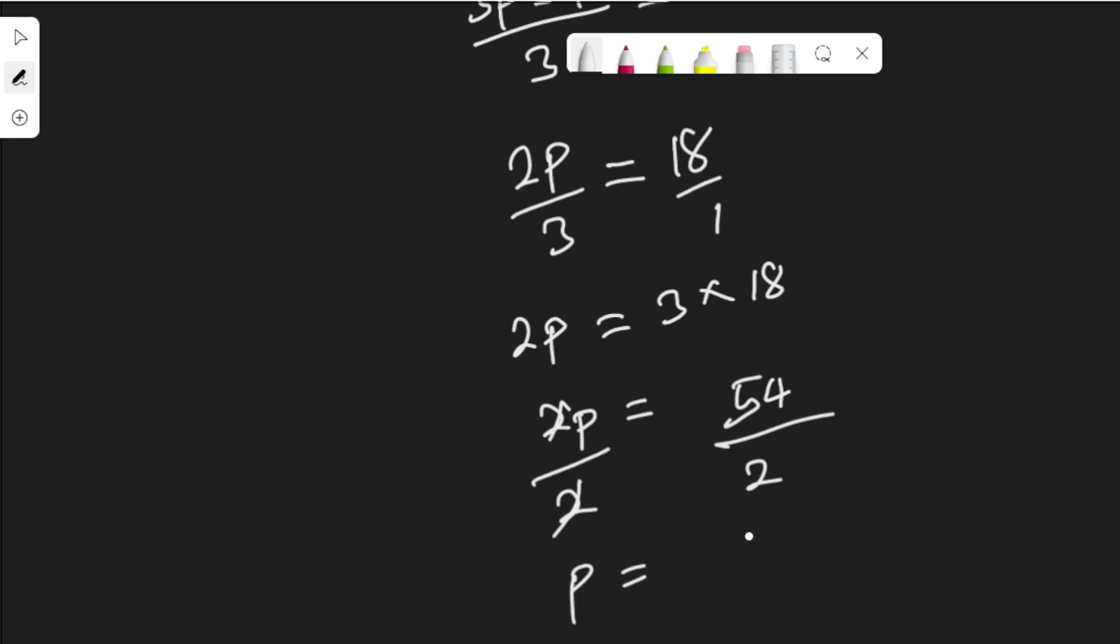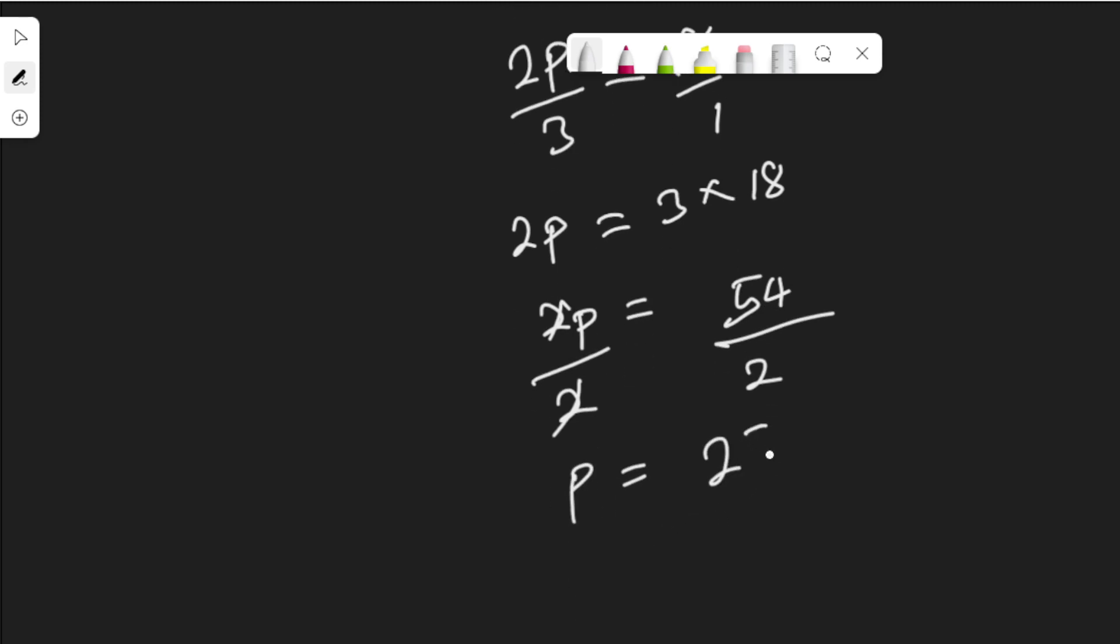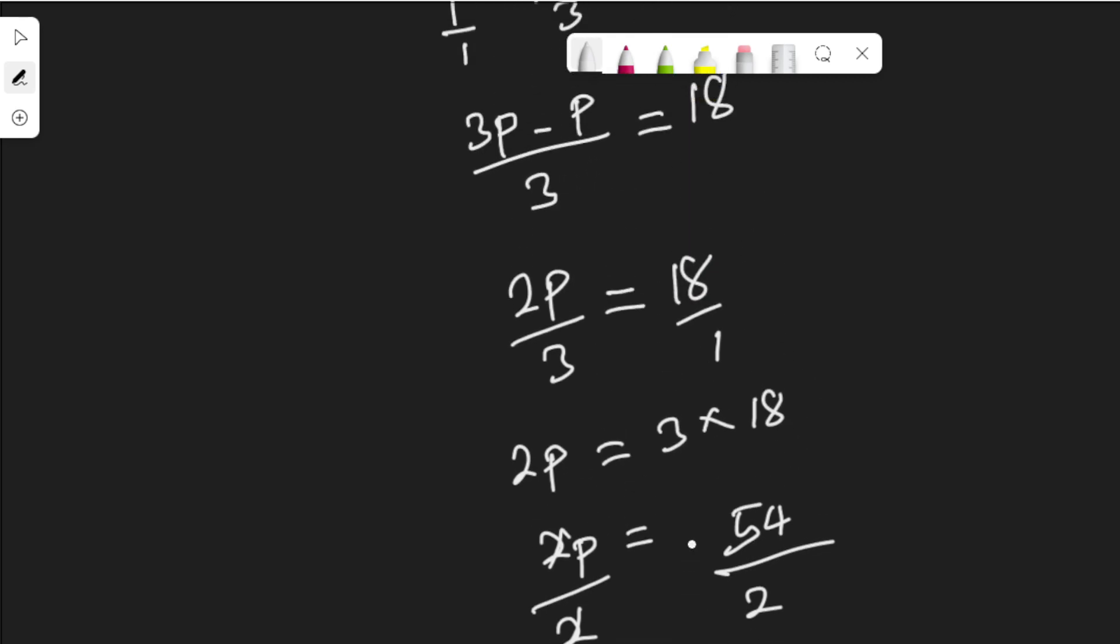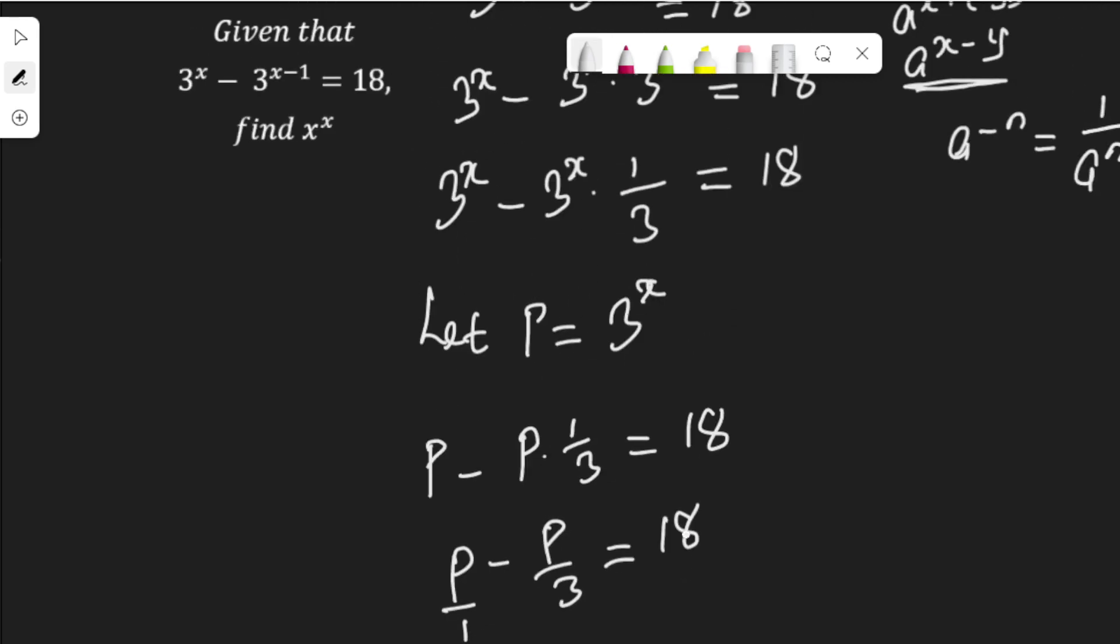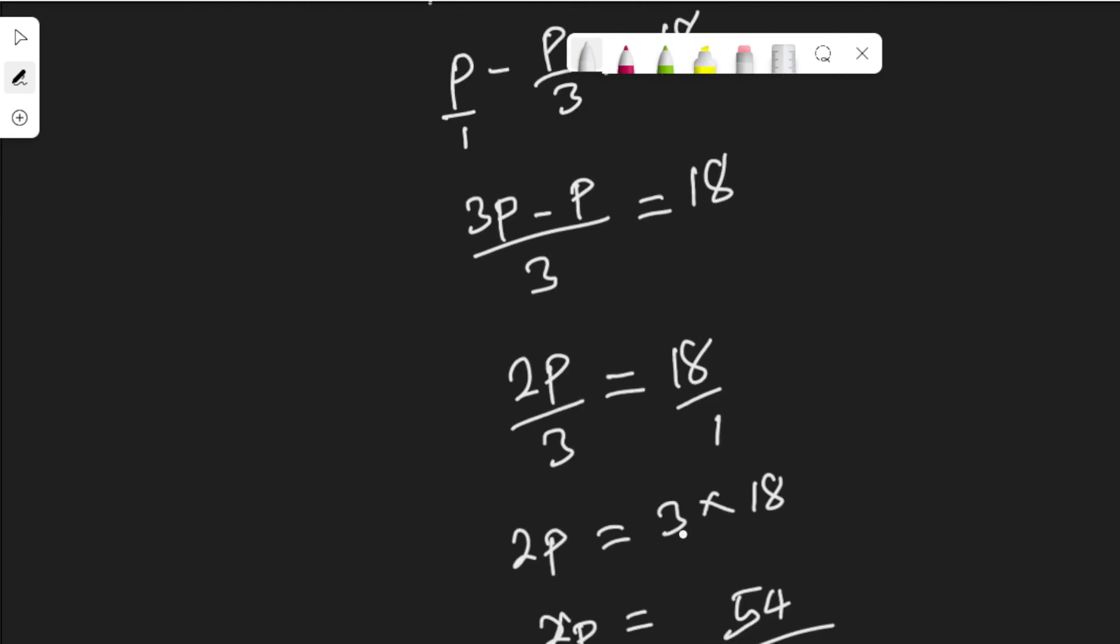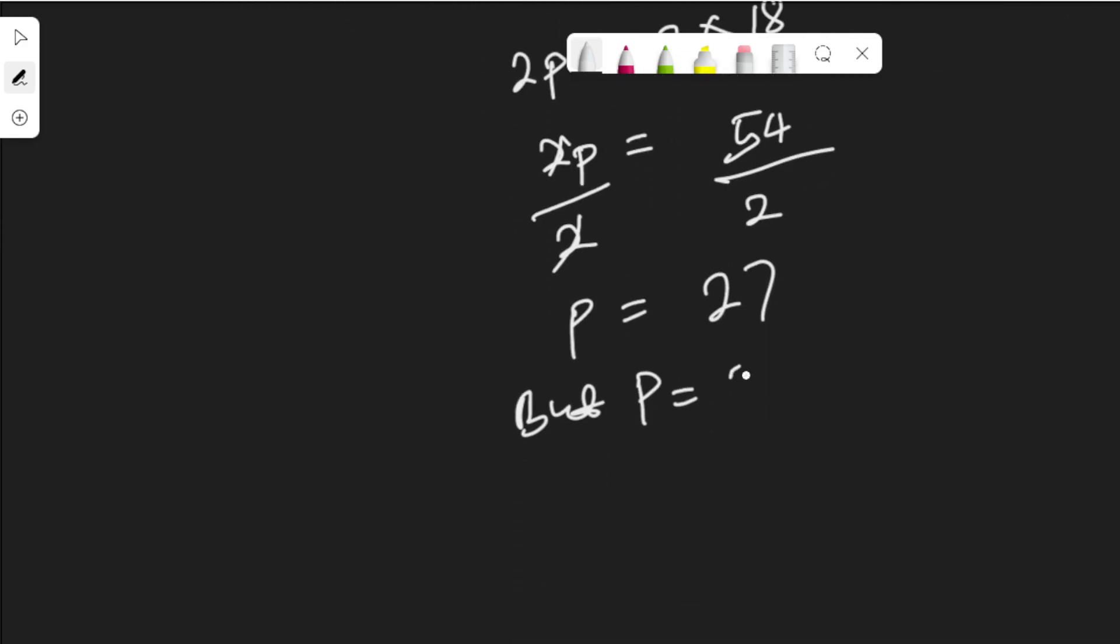So if p is 27, but you see, p is equal to 3 to the power of x here, 3 to the power of x from the beginning. Therefore, 3 to the power of x is equal to 27.